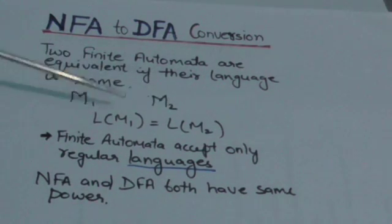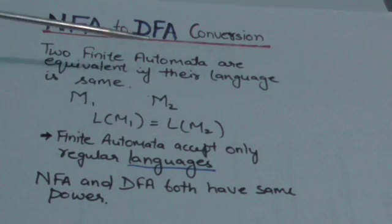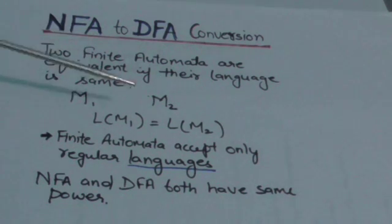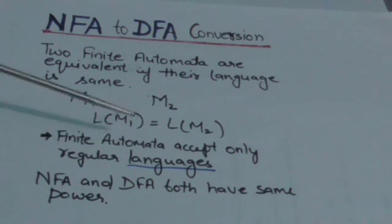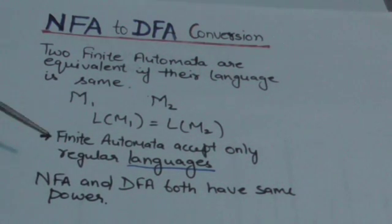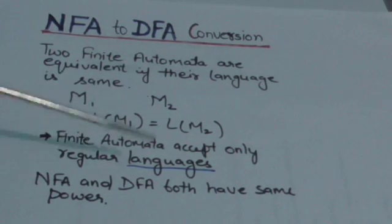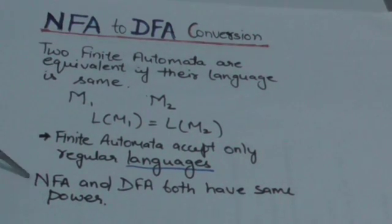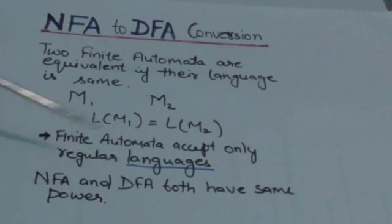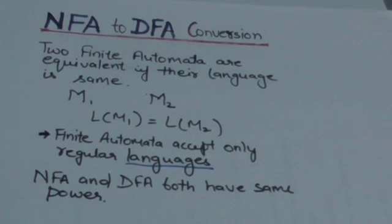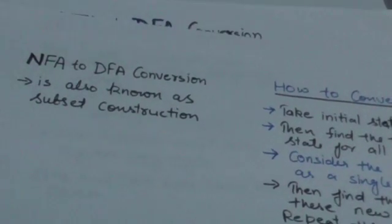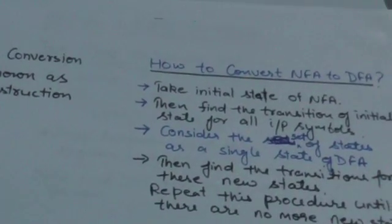NFA and DFA both have the same power. It means if a language is accepted by an NFA, then the same language can be accepted by a DFA. So if we have an NFA, we can construct a DFA equivalent to that NFA. This conversion is also known as subset construction.